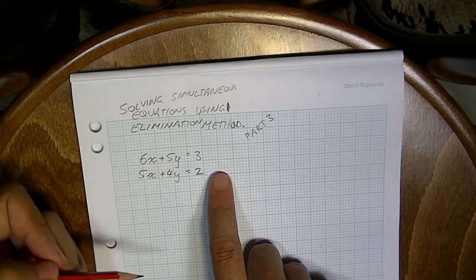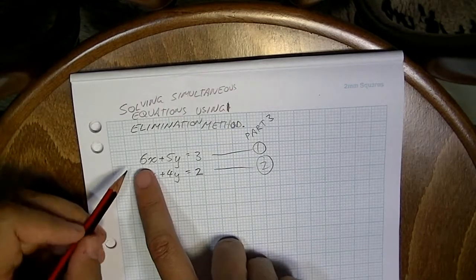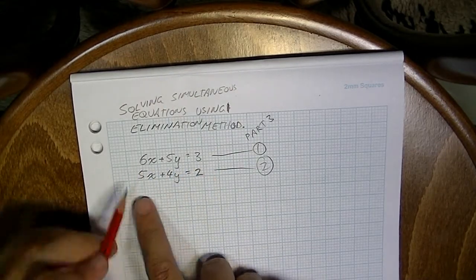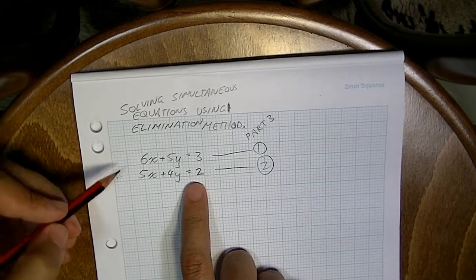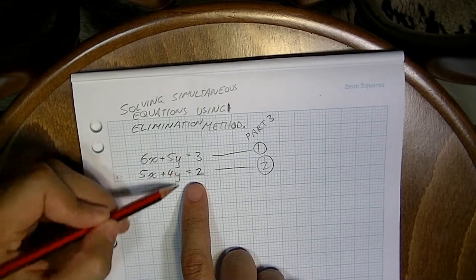Remember the basis behind how this elimination method works. What we were doing was taking 6x plus 5y equals 3 and 5x plus 4y equals 2, and we were either adding or subtracting them in the hope of eliminating either the x's or the y's.